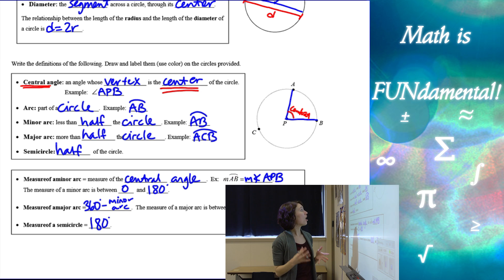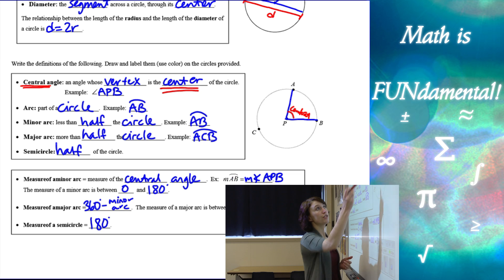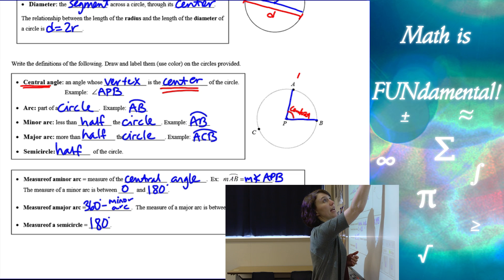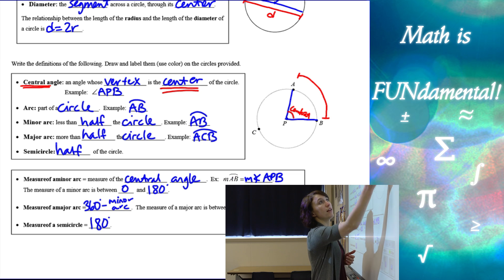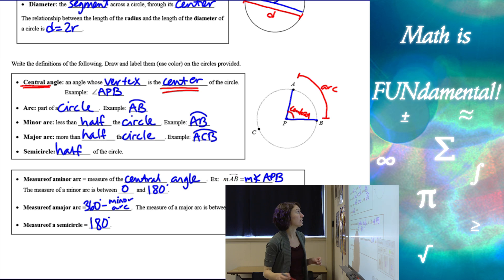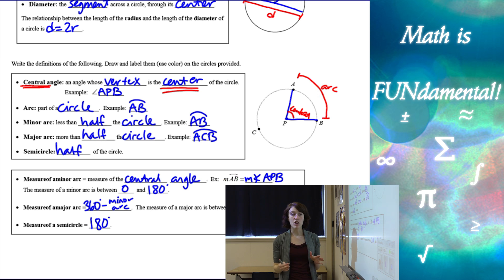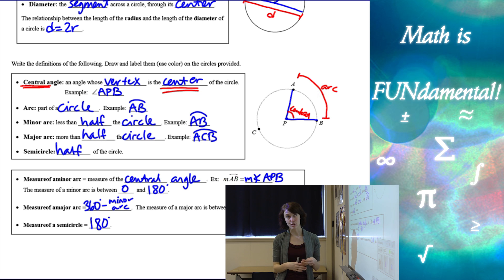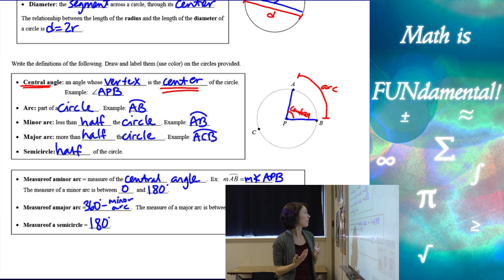An arc is part of the circle — from A all the way to B on the outside, following the circle itself. A minor arc is an arc that's less than half of the circle. For example, arc AB would be a minor arc because it's less than half.